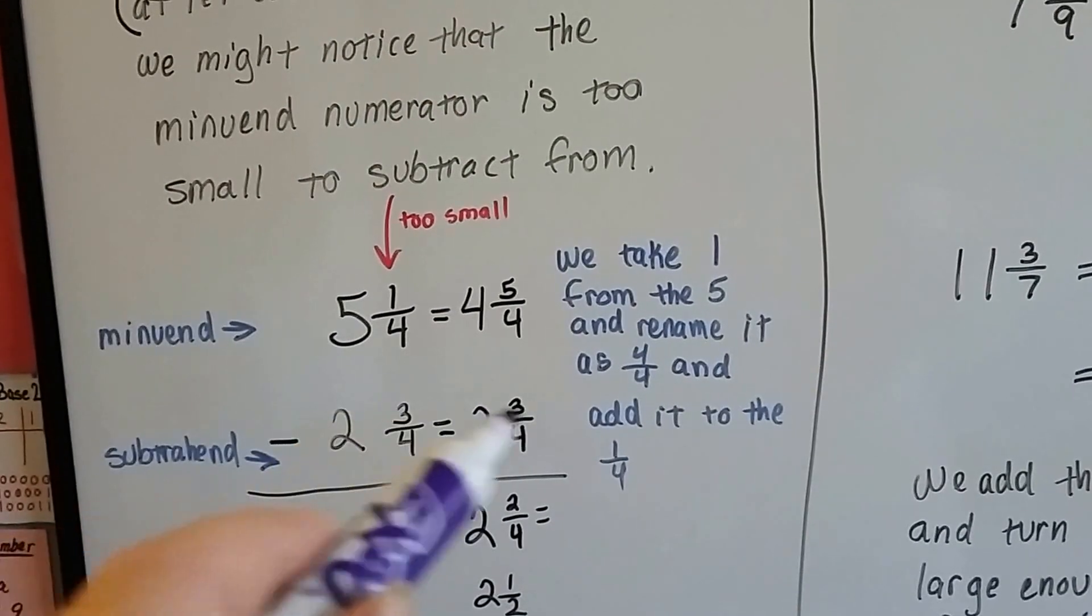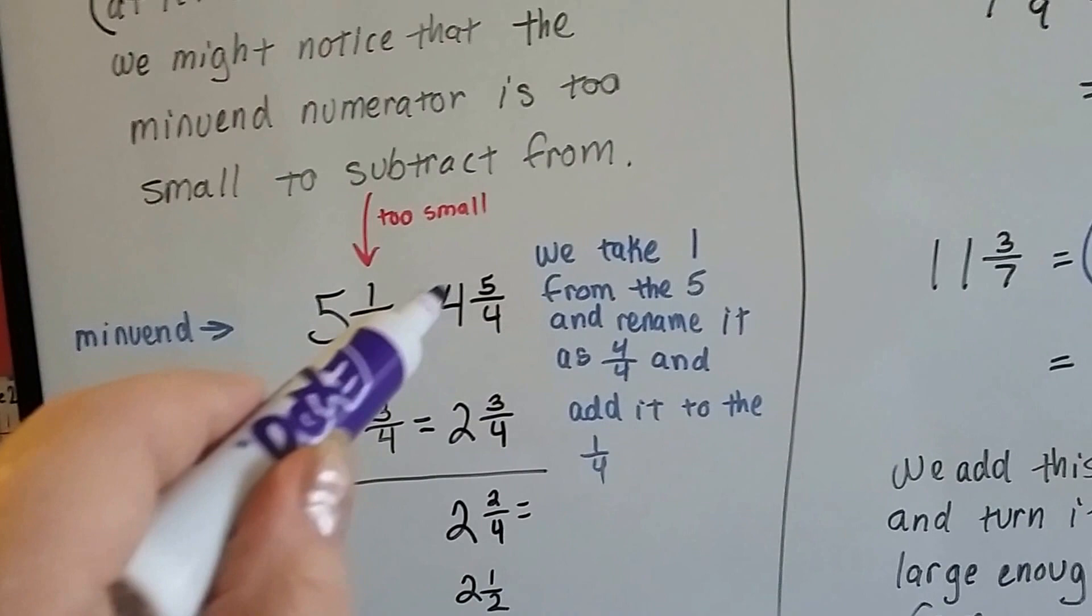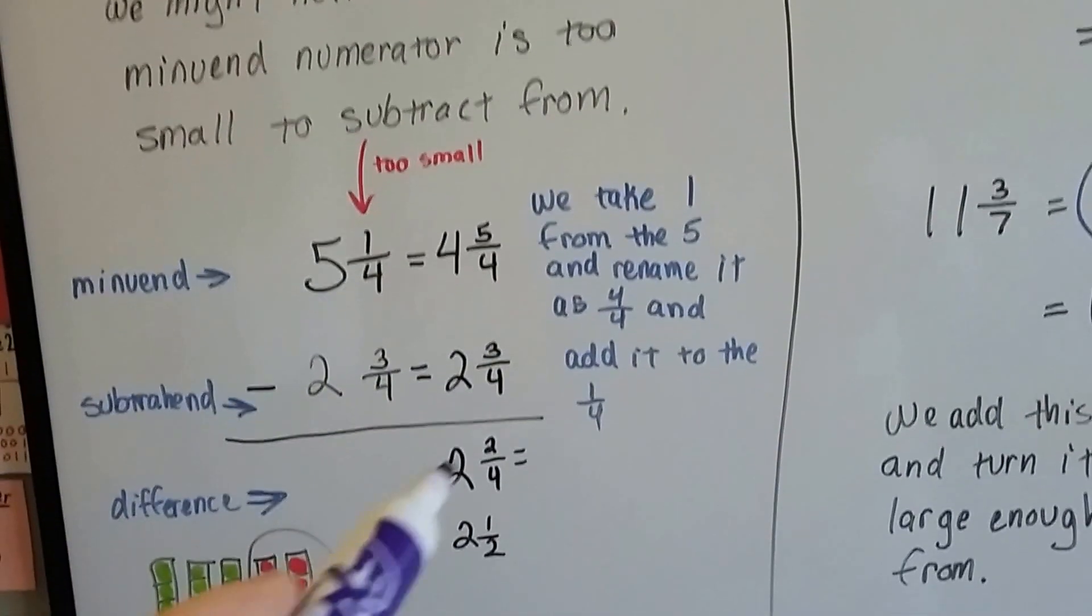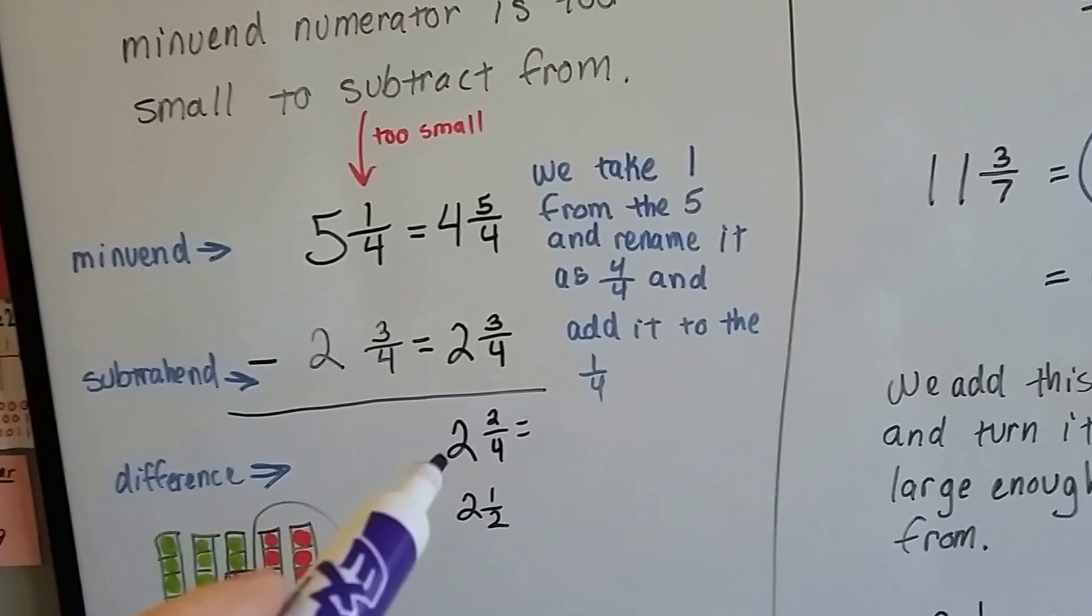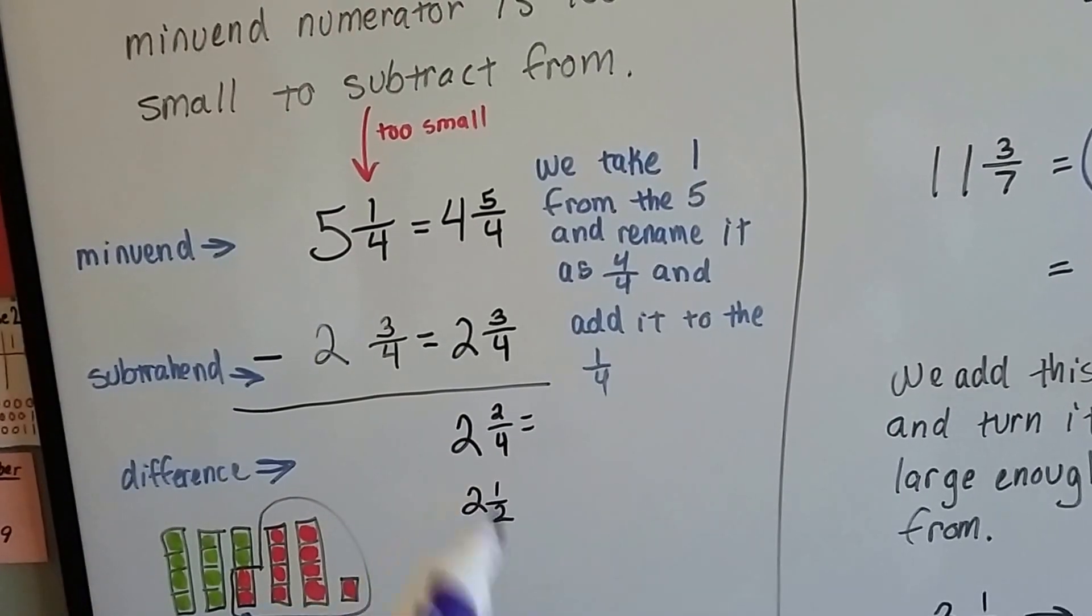Now we can take 3 fourths from the 5 fourths. We get 2, and then 4 minus 2 is 2. Then we reduce it to lower terms, and we know 2 can go into both the 2 and the 4, and we know the final answer is 2 and a half.